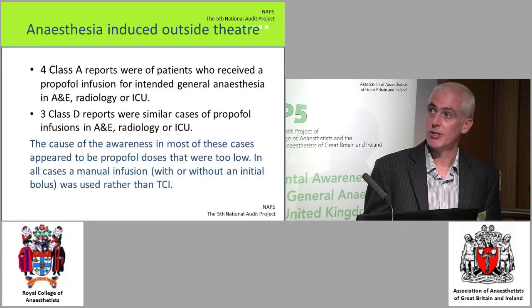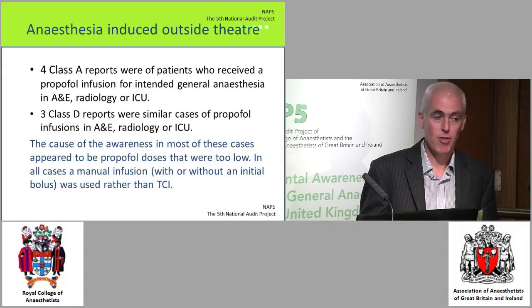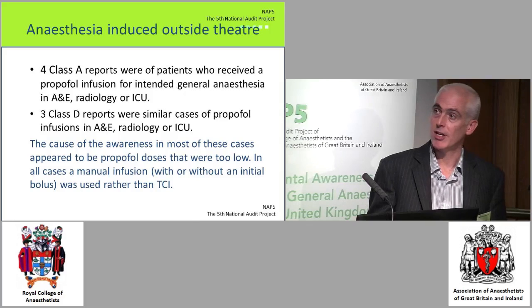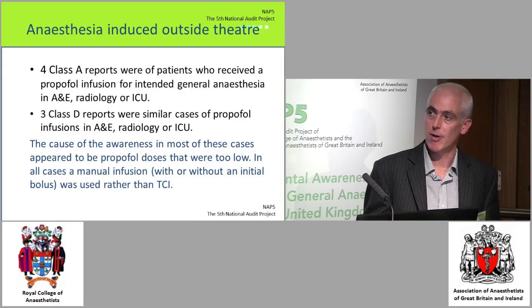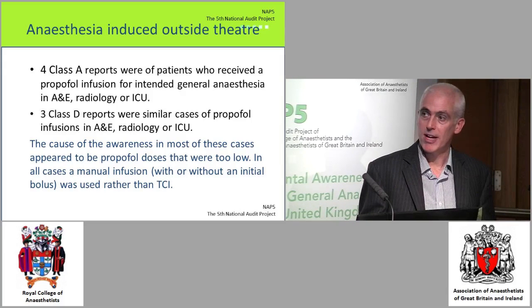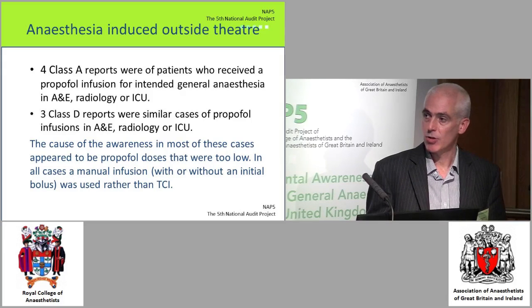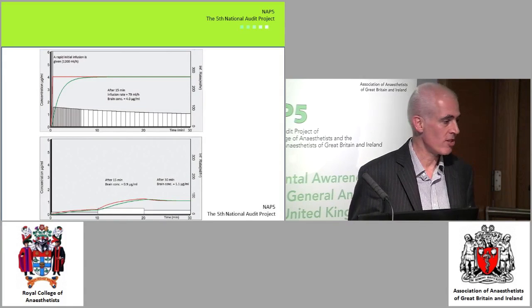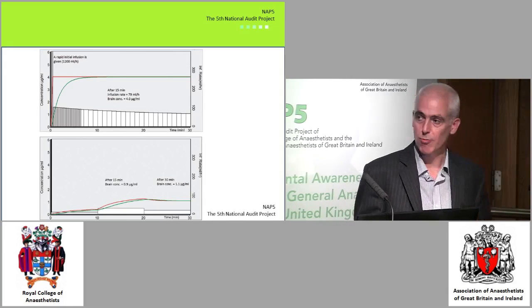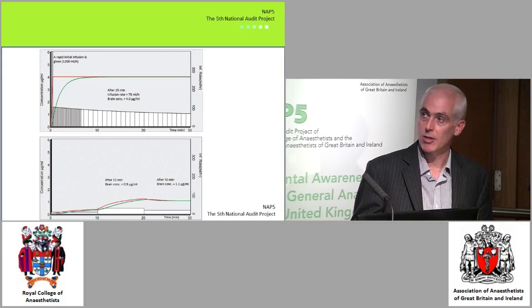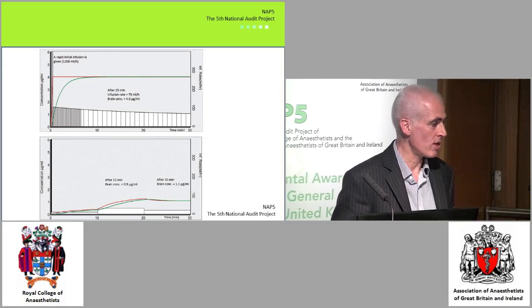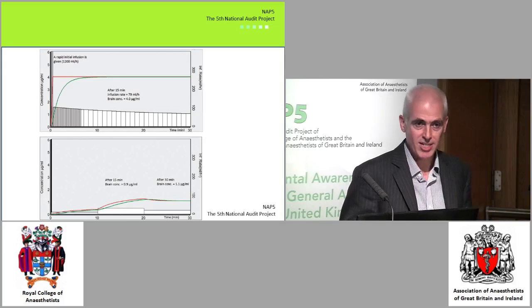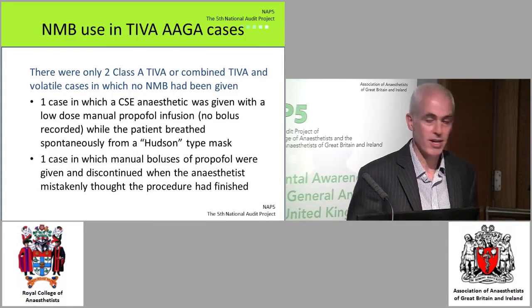Looking at cases of intravenous anaesthesia outside theatre — four Class A reports and three ICU reports of patients having anaesthesia in the ICU, emergency department, and radiology — all of these were manual infusions of propofol, not target-controlled infusions. In most cases, the cause appeared to be inappropriately low doses of propofol. The report includes pharmacokinetic simulations of likely blood and brain concentrations of propofol; one report shows a patient started on an infusion of 10 mls per hour of propofol with no bolus, which is very unlikely to achieve loss of consciousness. So outside theatre, inappropriately low fixed-rate infusions were clearly the main causative factor.